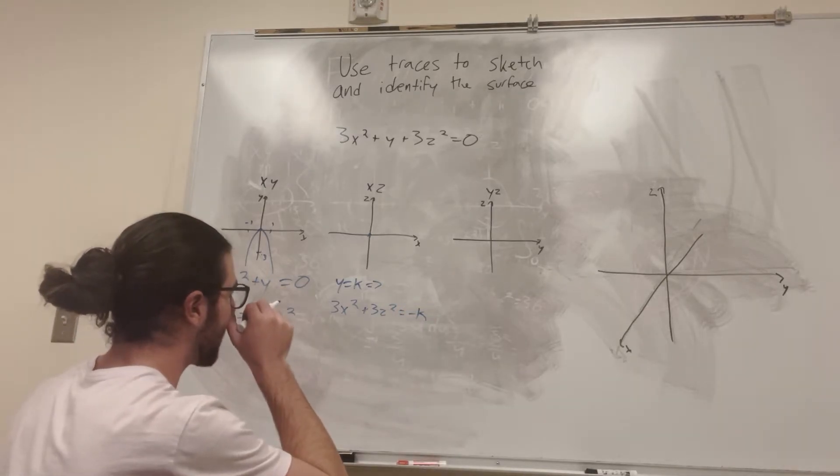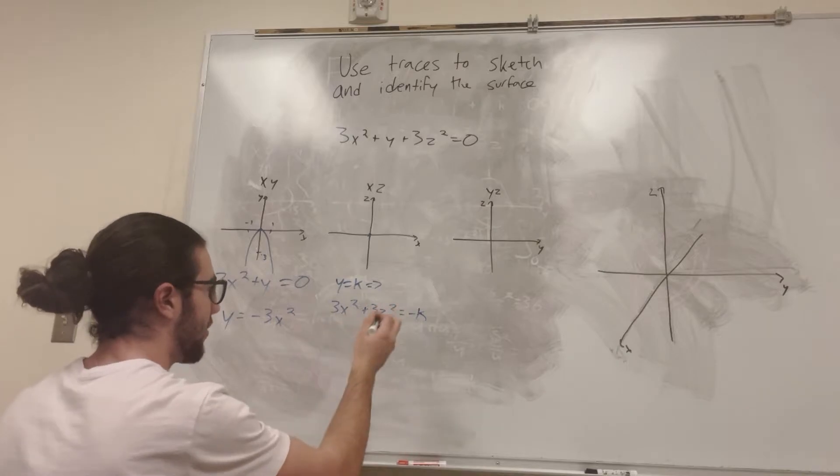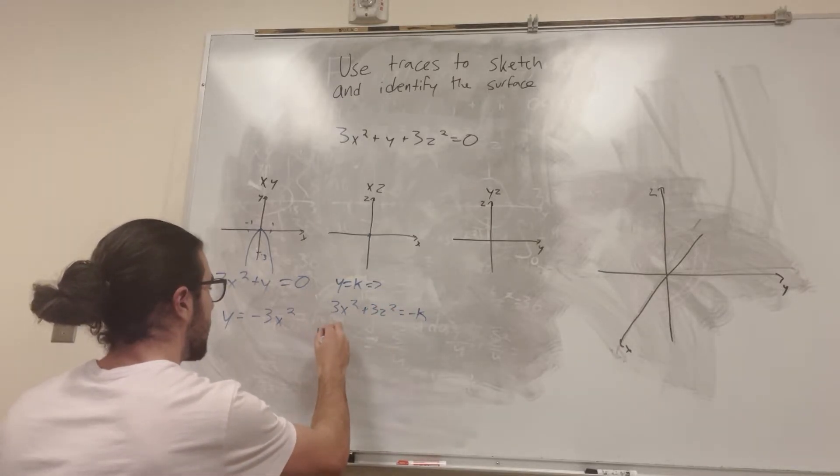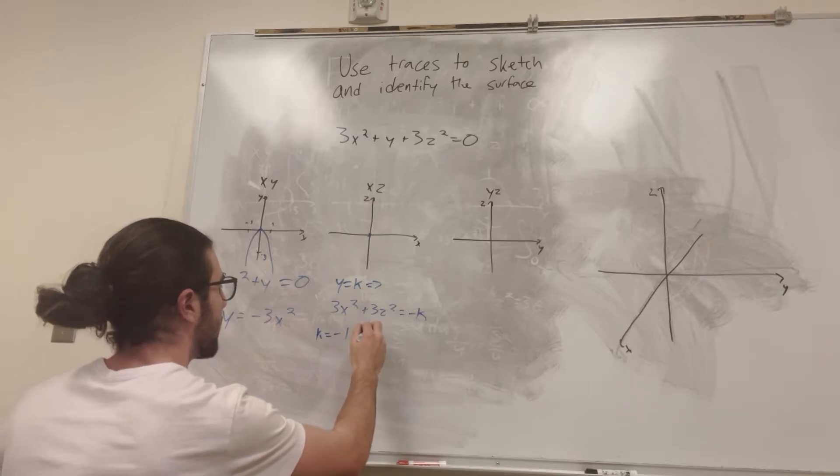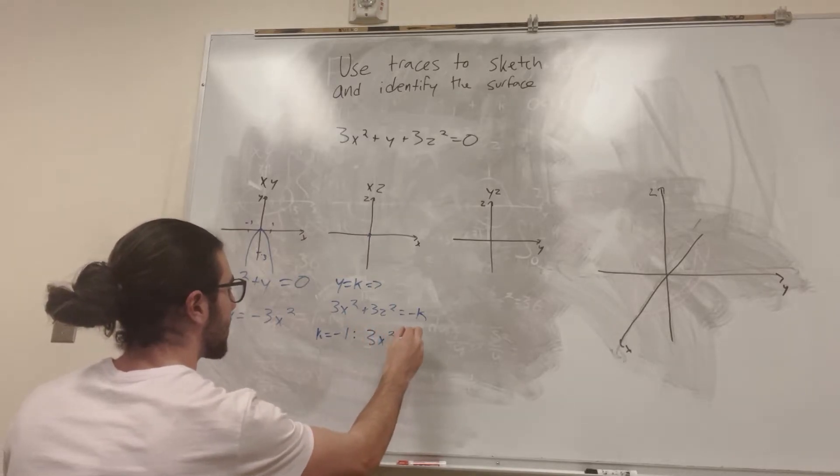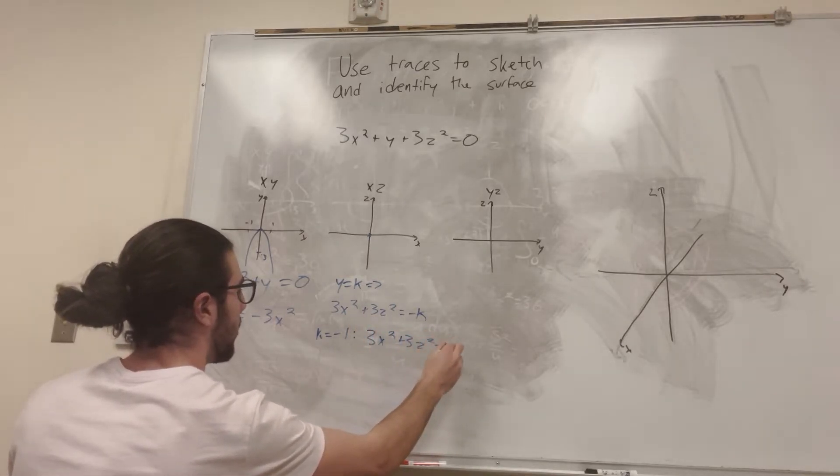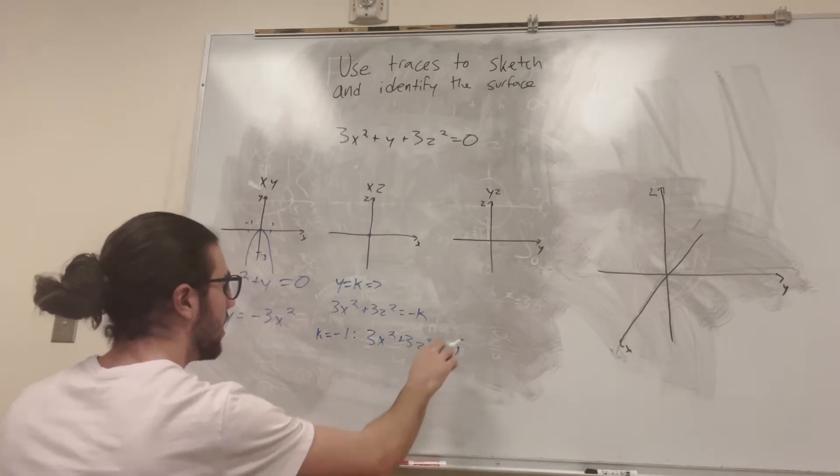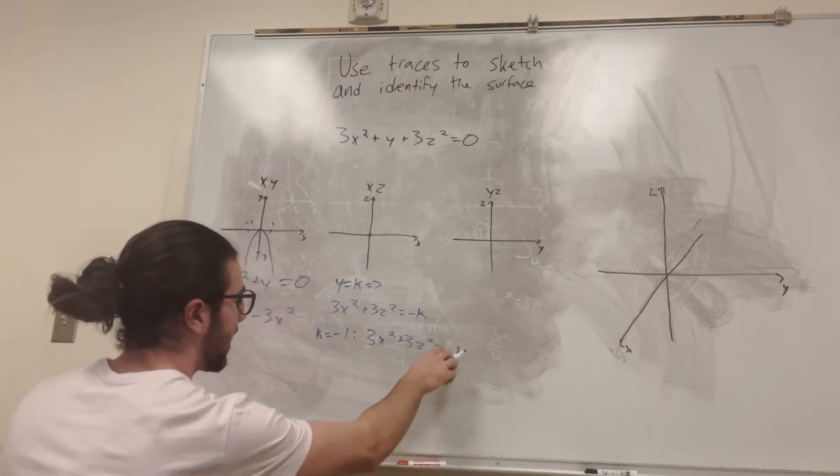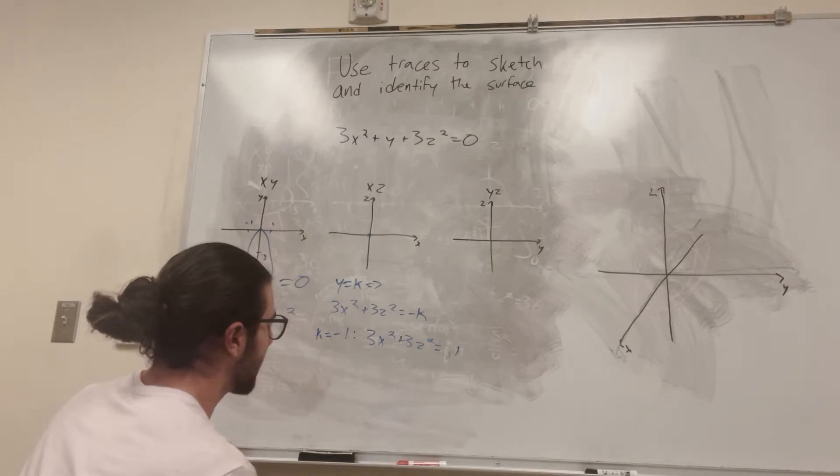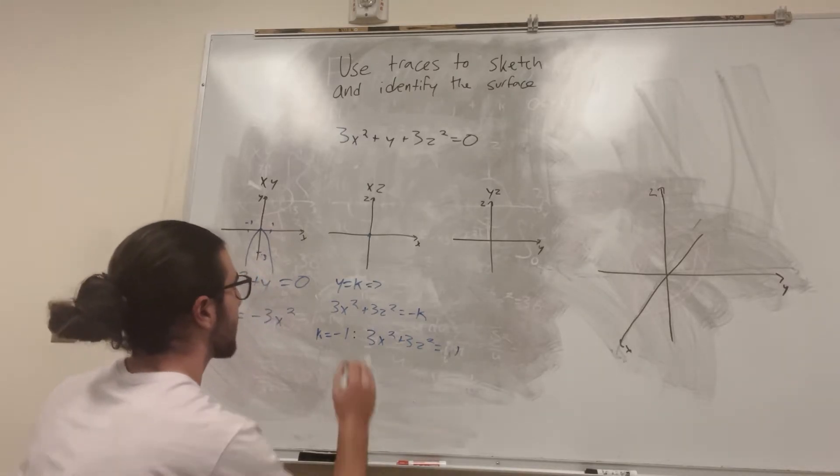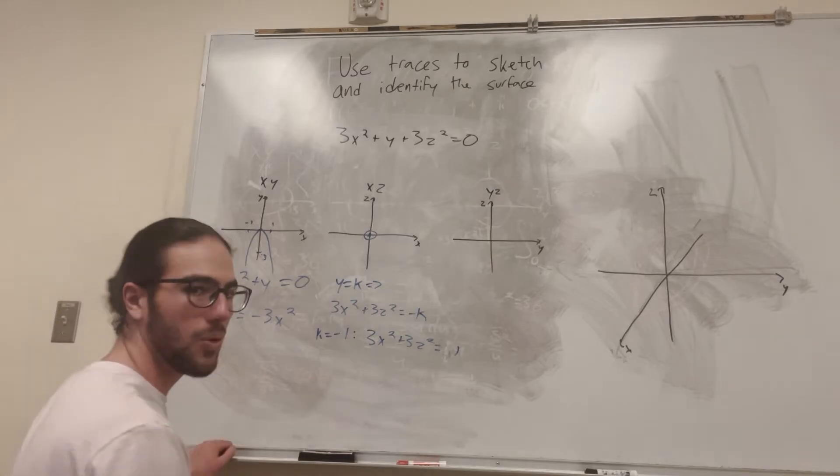Alright, so let's say that k is equal to negative 1, right? So if we say that k is equal to negative 1, that's basically saying y is equal to negative 1. So then we have 3x squared plus 3z squared is equal to negative 1, or just normal 1. Alright, now this is an equation of a sphere we can write. Alright, so basically it's going to be like a tiny little number. It's going to be very small in there. But boom, that's when y is equal to 1.